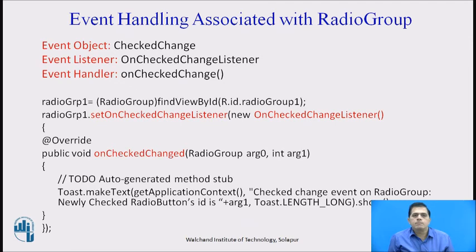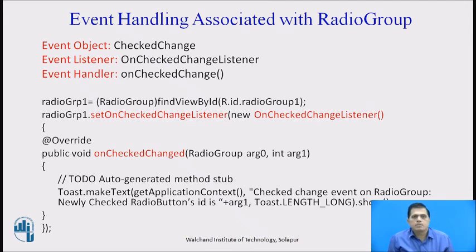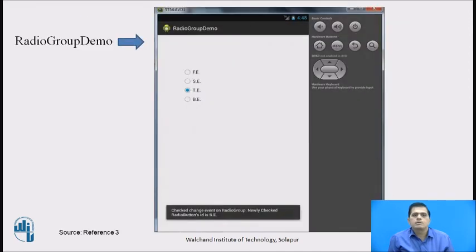Similarly, when working with event handling associated with a RadioGroup, we again have two event management components: the event listener OnCheckedChangeListener and the event handler OnCheckedChange. When working with radio buttons, these two work together to perform the action. When the user clicks a radio button within the radio group, the OnCheckedChangeListener works together with the OnCheckedChange handler.